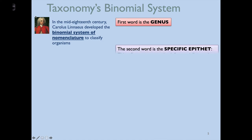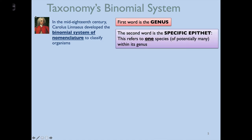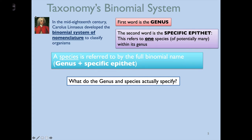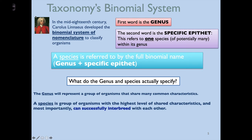There was a man named Carolus Linnaeus who lived in the 1700s who was the first to come up with this binomial system of nomenclature. Binomial means essentially a two-part name. The first part is called the genus, and the second part is called the specific epithet, which refers to one species of potentially many within a genus. A genus is a group of organisms that have many similar characteristics, whereas the specific epithet narrows it down to one particular individual from that bigger group. A species is a group of organisms with the highest level of shared characteristics that can successfully interbreed with one another.